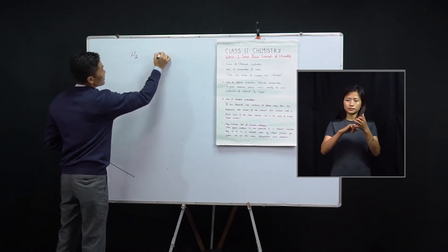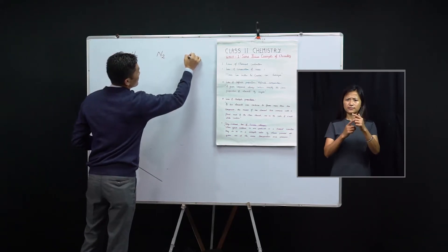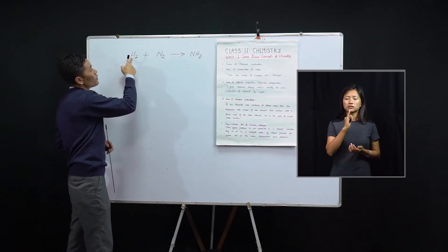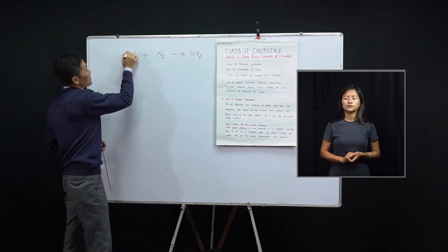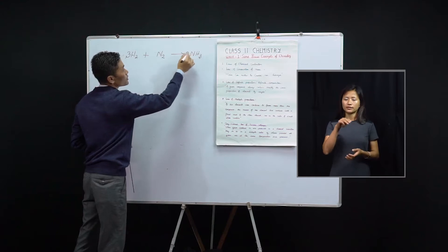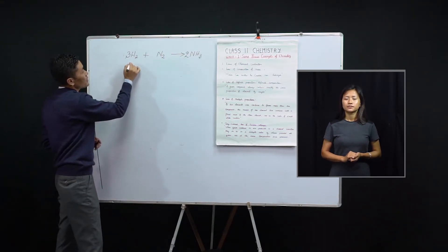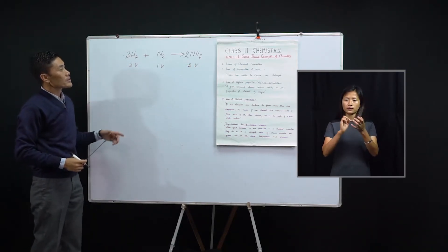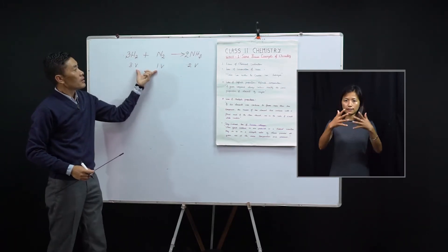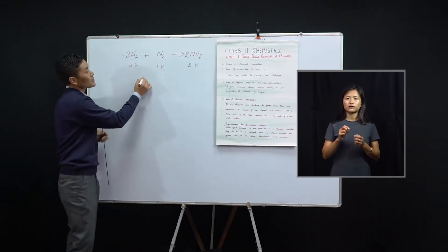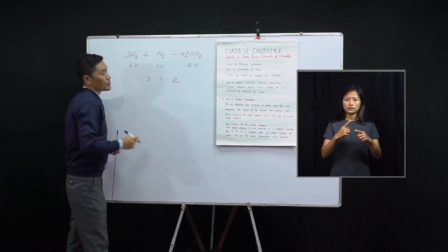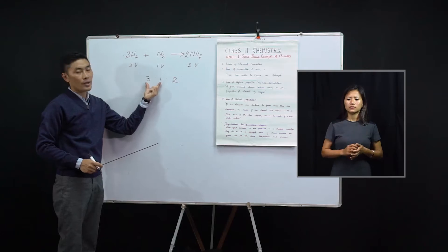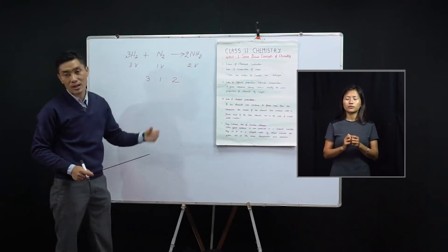Hydrogen, a gas, combines with another gas, nitrogen, to give ammonia, which is also a gas. The balanced chemical equation is: 3 moles of hydrogen combining with 1 mole of nitrogen giving 2 moles of ammonia. In terms of volumes, 3 volumes of hydrogen combine with 1 volume of nitrogen to give 2 volumes of ammonia. The volumes of the gaseous reactants and the gaseous product are in the simple whole number ratio 3 to 1 to 2, illustrating Gay-Lussac's law of gaseous volumes.